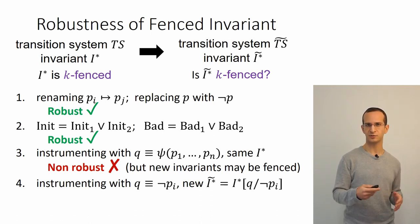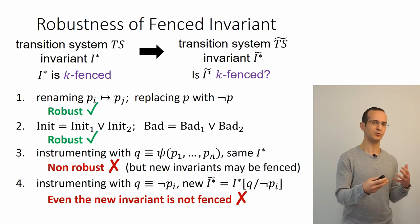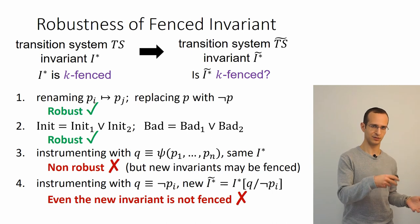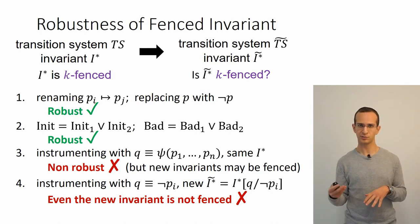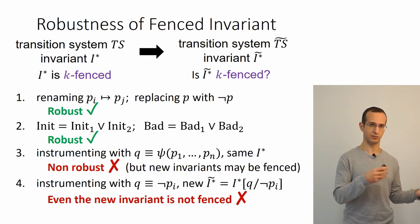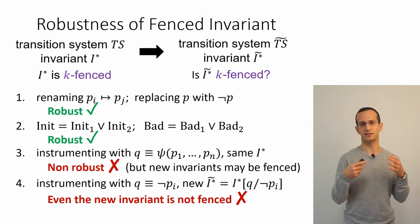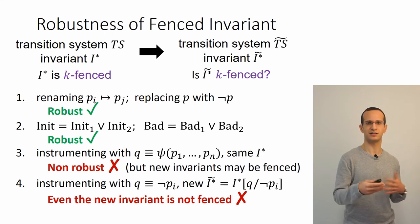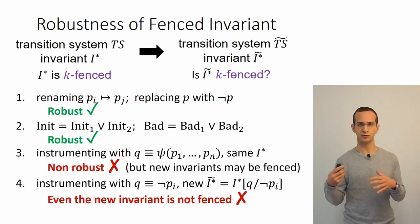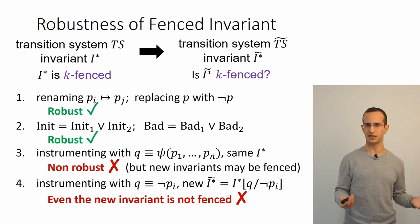In the last transformation—trying to make the invariant monotone by introducing variables for the negation of all originals—the situation is worse: not only is the original invariant no longer fenced, the new invariant also is not fenced. So our attempt at transforming a fenced non-monotone invariant to a fenced monotone invariant is unsuccessful.